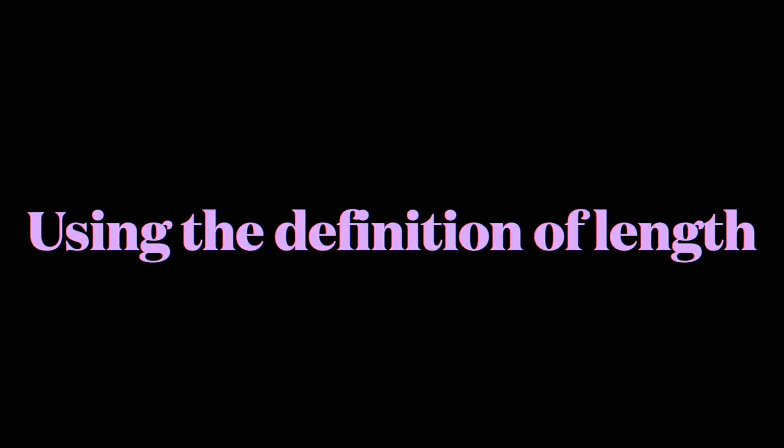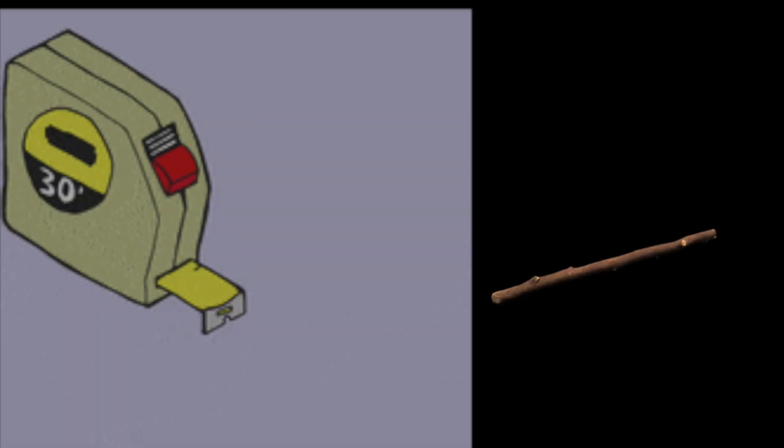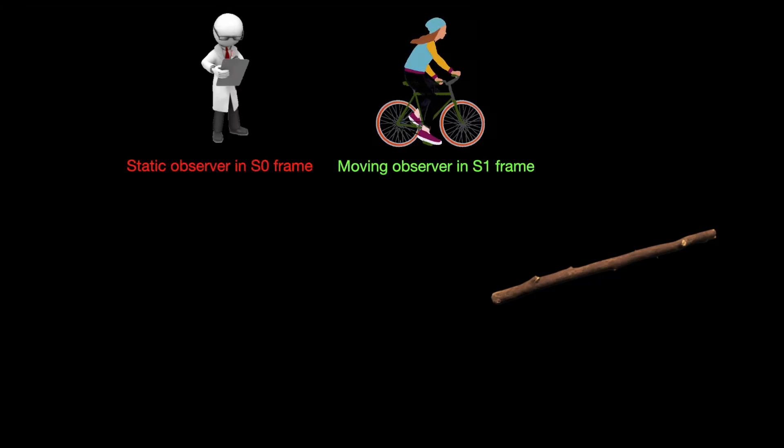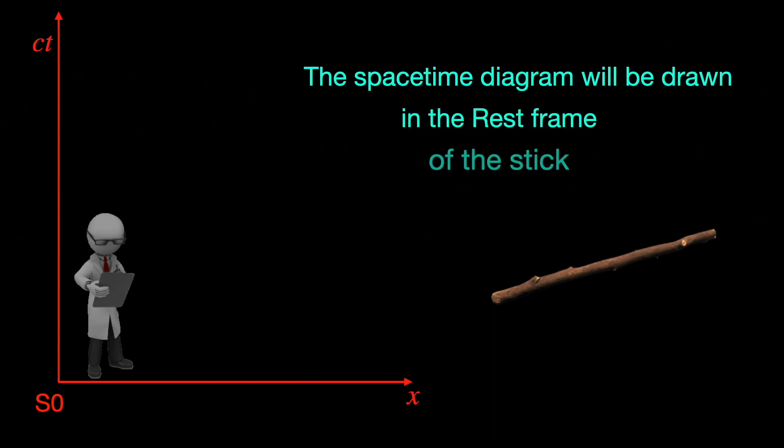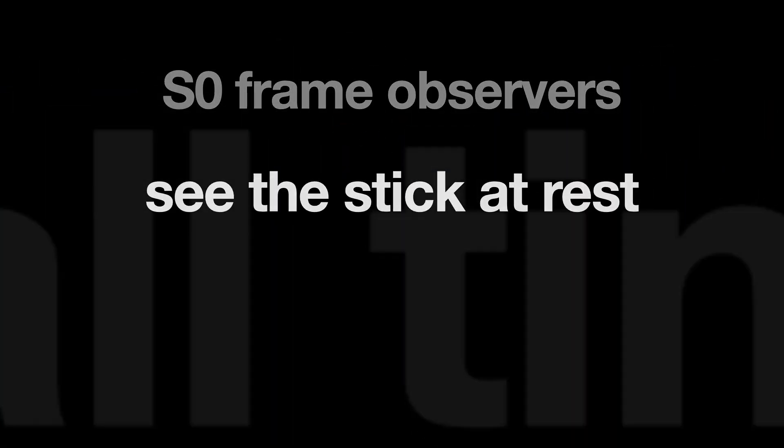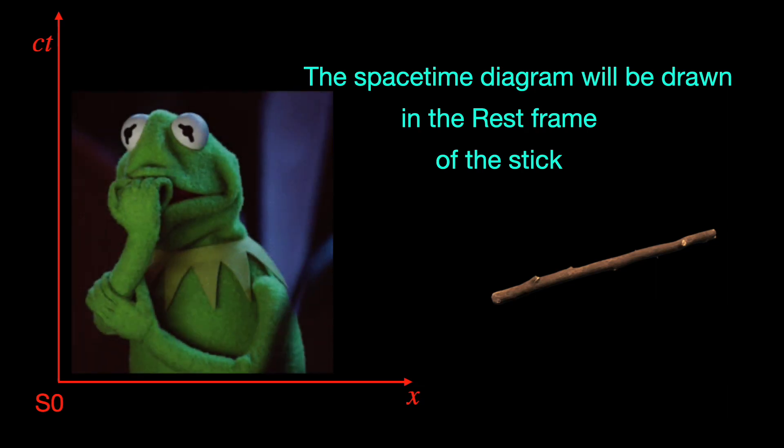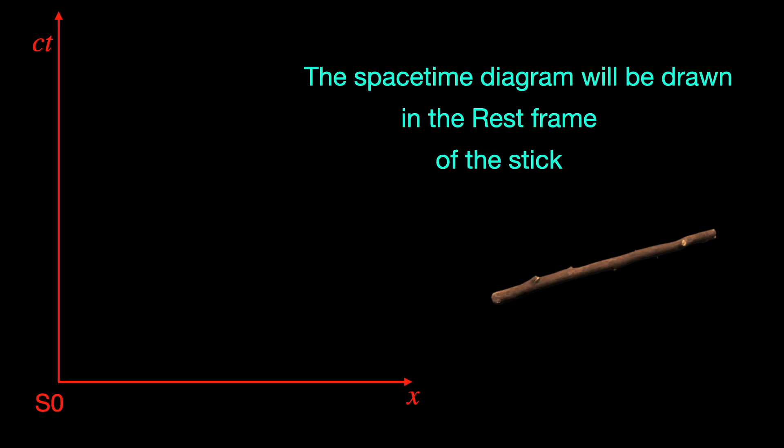Okay now we use the definition we just discussed to measure the length of our stick and depict the length measurement process carried out by the S0 and S1 frame observers in a space-time diagram that we the observers in frame S0 draw. Remember that S0 happens to be the rest frame of the stick so we see the stick at rest at all times but where on our diagram should the stick be? It should be lying along the direction of our space axis.